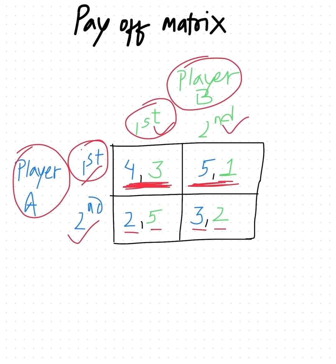Now let's look at 5, 1. For 5, 1, the corresponding strategy for Player A is first and for Player B is second. When Player A selects the first strategy and Player B selects the second strategy, the result is 5, 1.